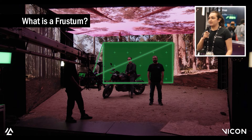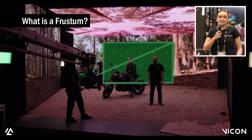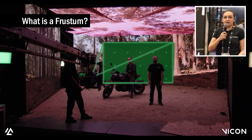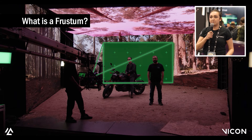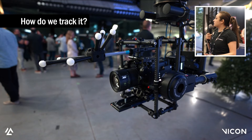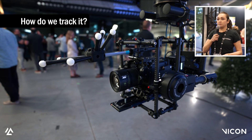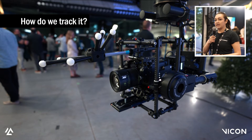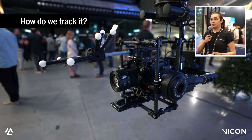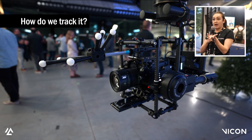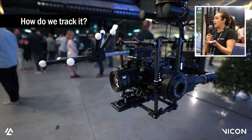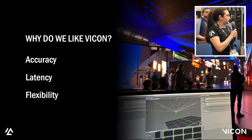When we're tracking the camera, we want to find the exact position and orientation of that camera in 3D space. What we do is we calibrate the nodal point of the camera lens in relation to where the tracking crown is sitting, and we do that in Vicon software.